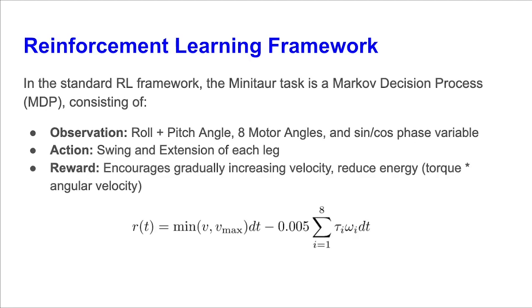We now discuss the experimental framework for the Minotaur robot. In our reinforcement learning framework, the Minotaur task is a Markov decision process consisting of the following. The observation is what we can actually measure using the robot's onboard sensors. The observation is given as the roll and pitch angle of the robot base, as well as all eight motor angles, and a phase variable which is represented by sines and cosines. The action consists of the desired swing and extension of each leg using position-controlled motors. The desired motor angles are converted into motor torques through a PD controller. The reward function is defined to encourage gradually increasing velocity via a guiding maximum velocity, or v_max, along with penalizing the energy, which is calculated by the products of the torques and angular velocities of each of the eight motors.